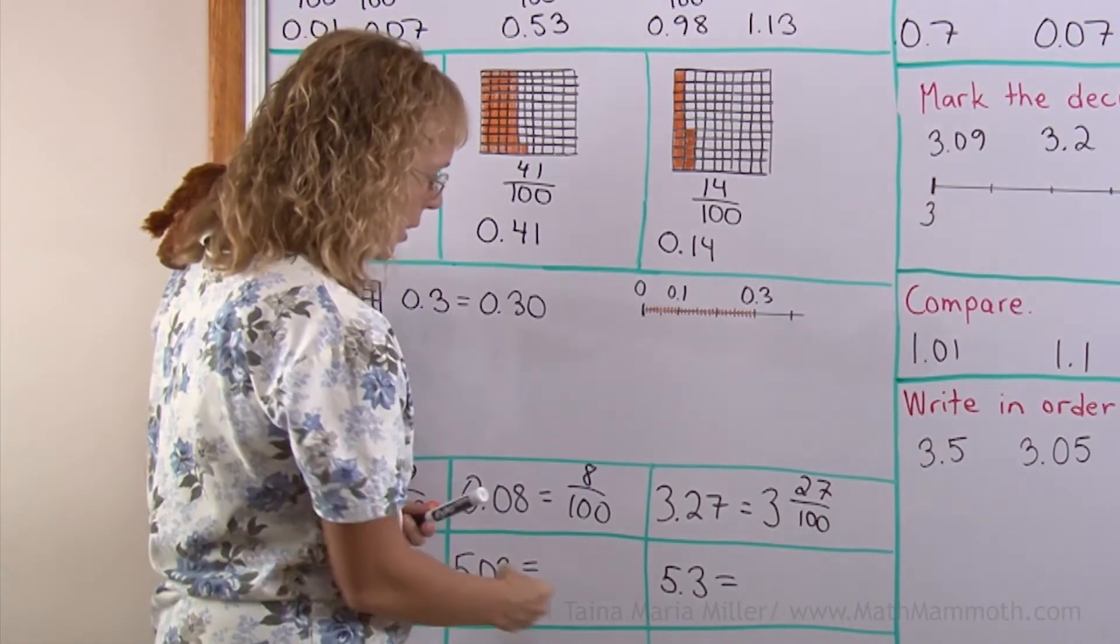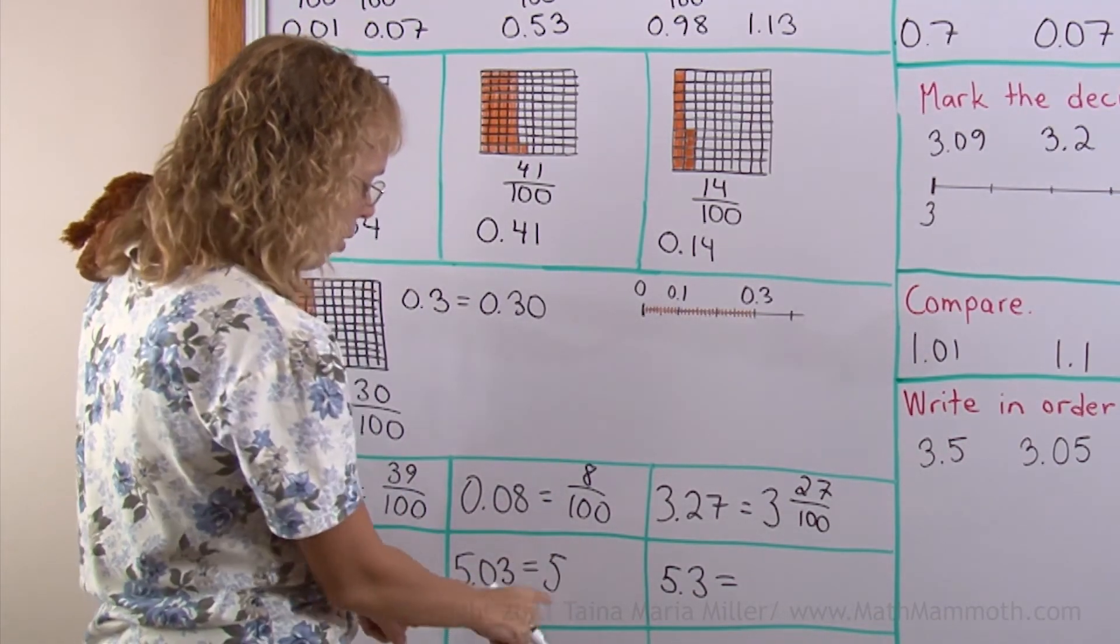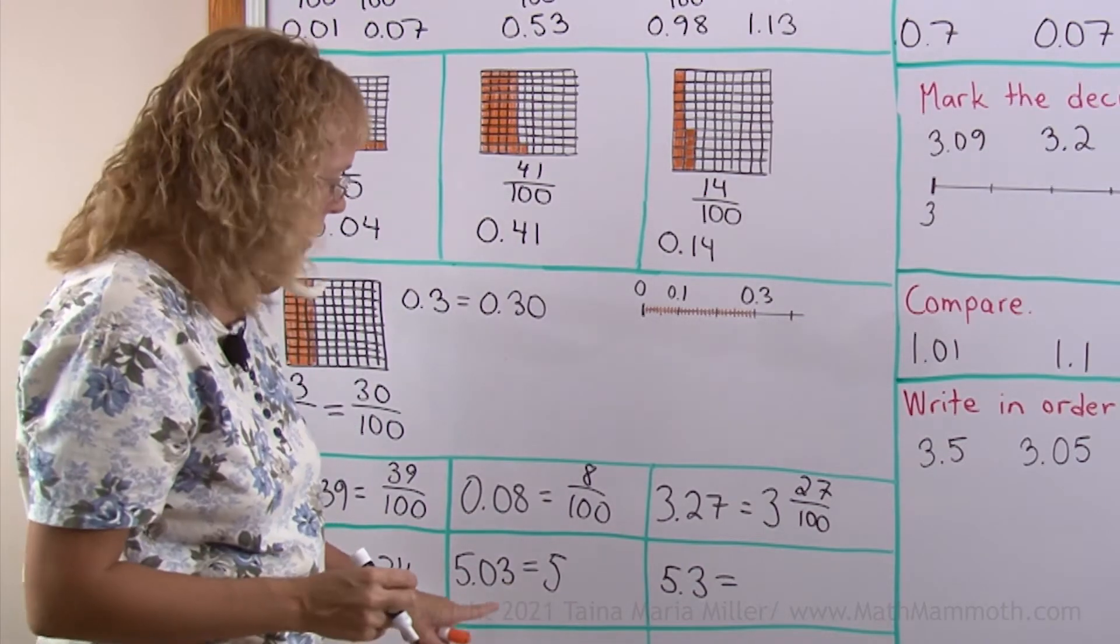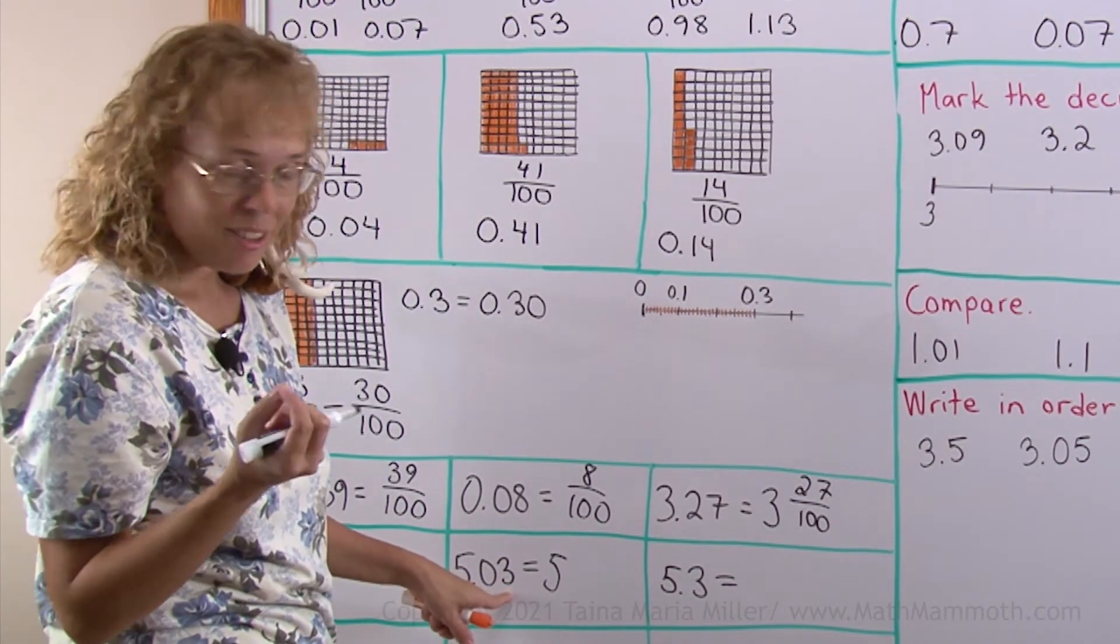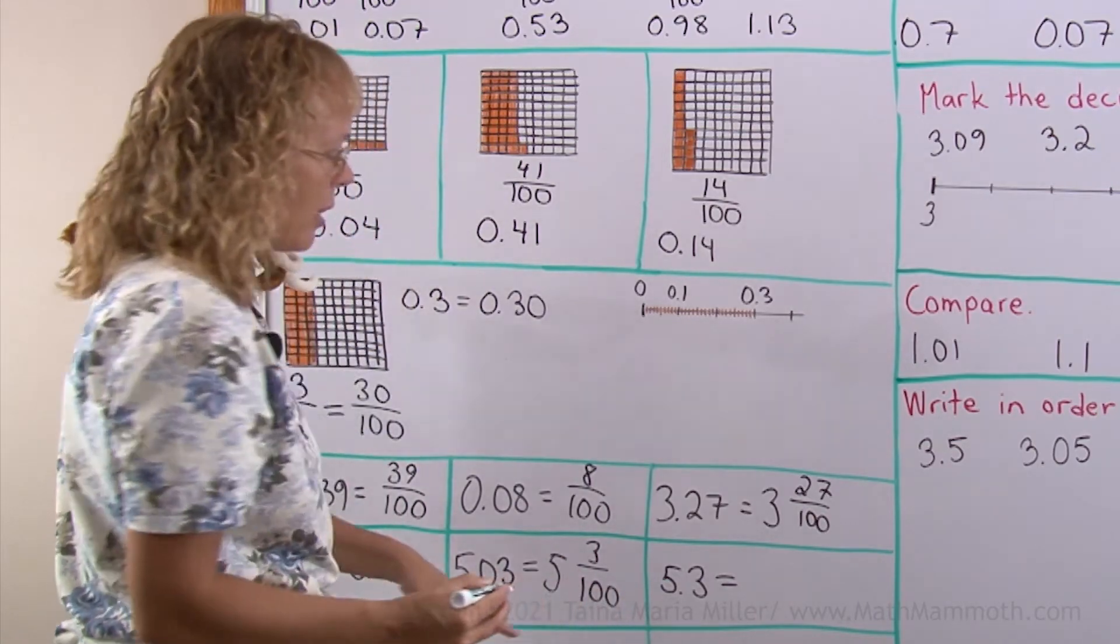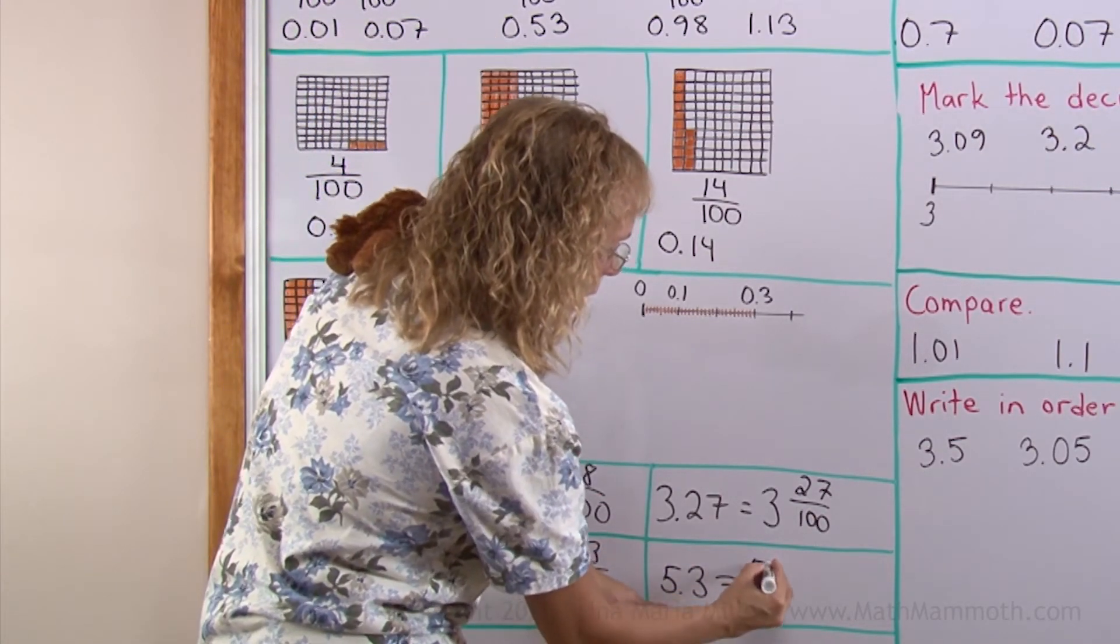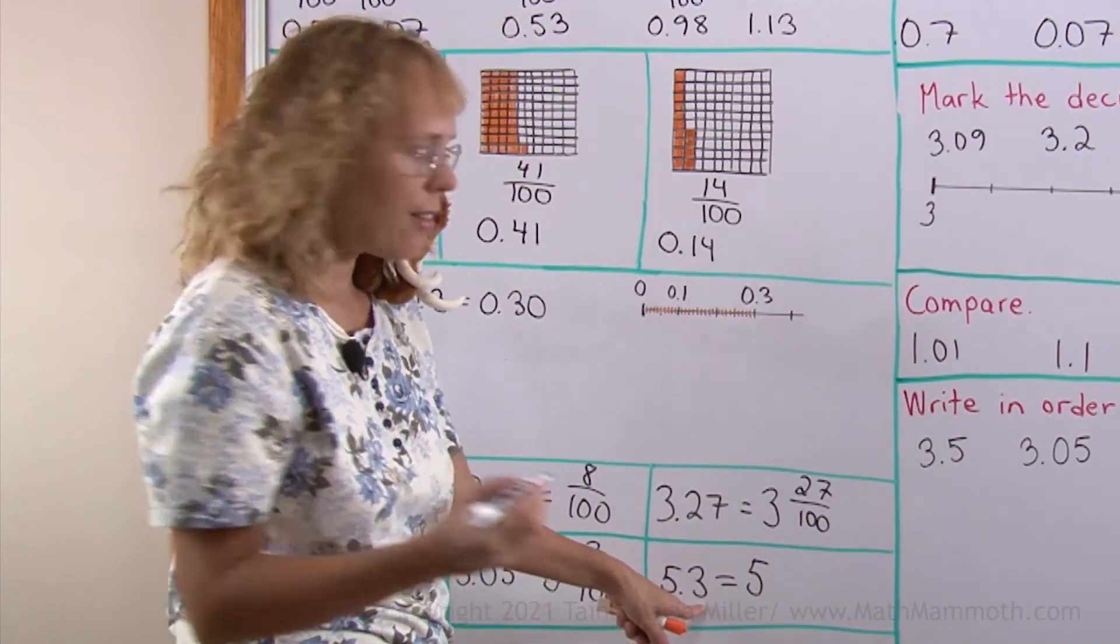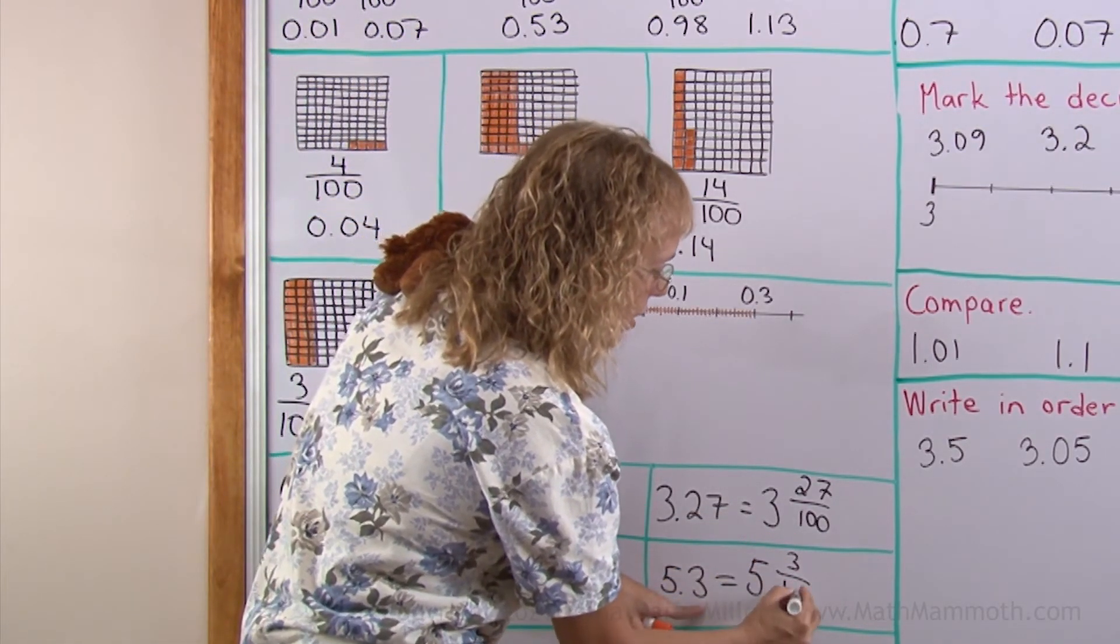Here, as a mixed number. Again, 5. The whole number part is the same. Then there is 3 hundredths. Not 3 tenths, but 3 hundredths. But now this time I have 5, my whole number, here. And then this is the digit for tenths. So I have 3 tenths.